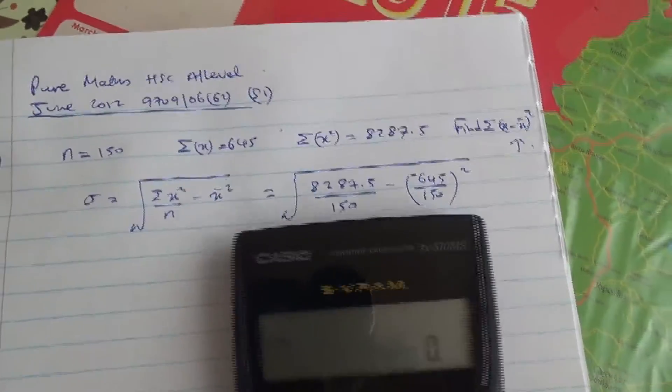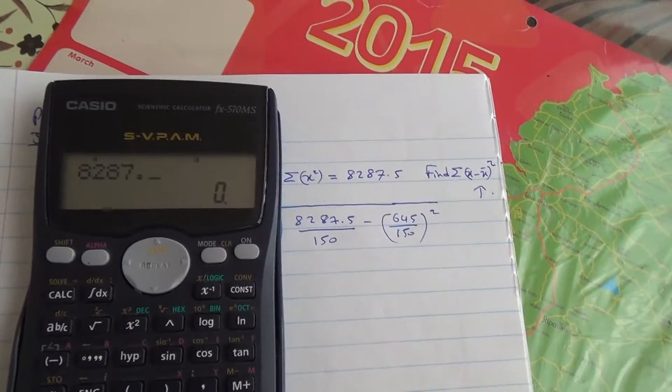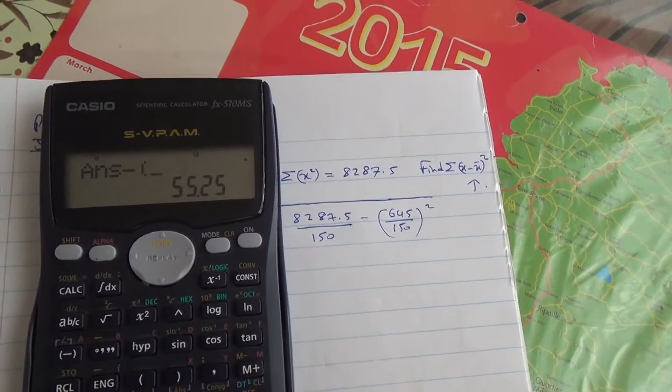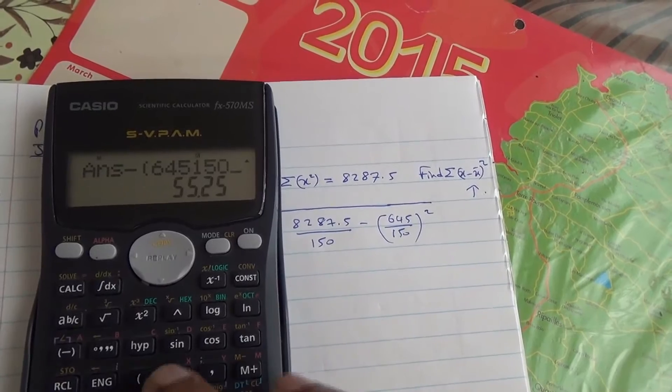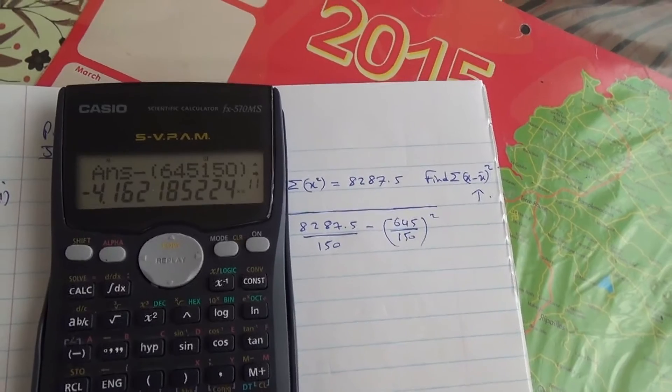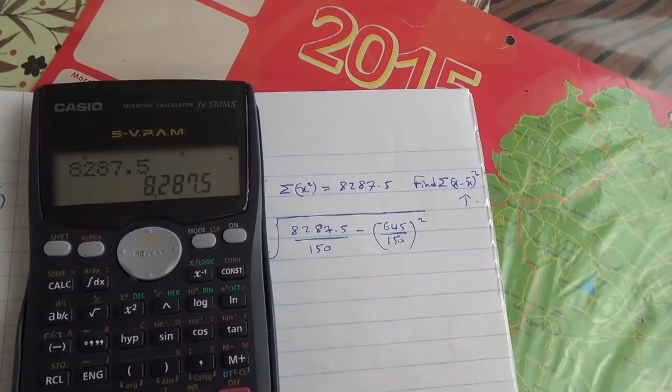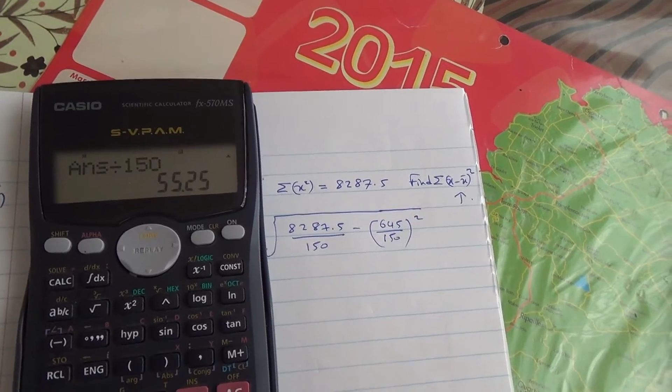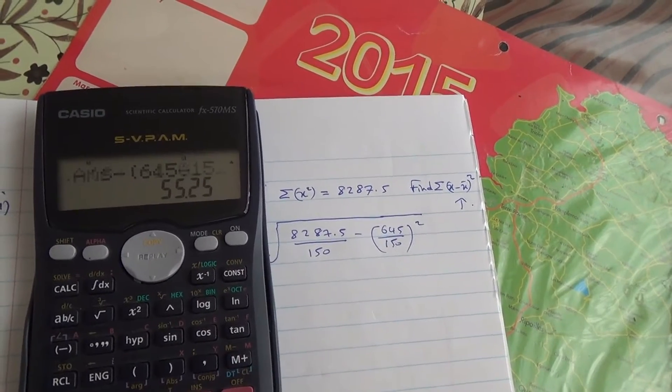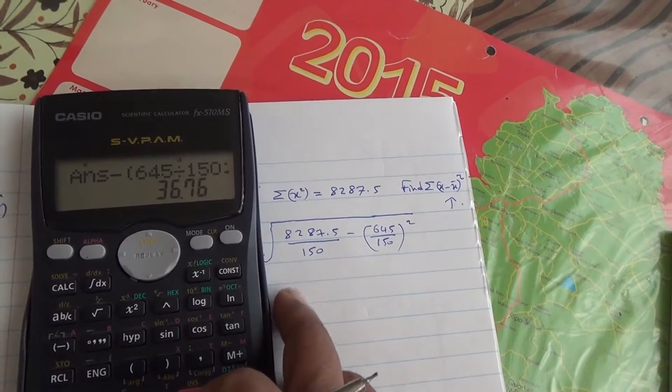All right, so let's do this in the calculator here. We have 8287.5 over 150 minus 645 over 150, all of that to the square. Now, and that's going to give us, oops, oh, something wrong here, 8287.5 divided by 150, and we need to subtract in brackets 645 divided by 150, and all of that to the square, 36.76.